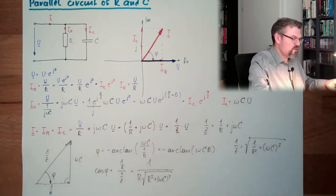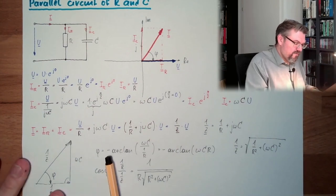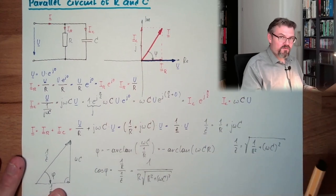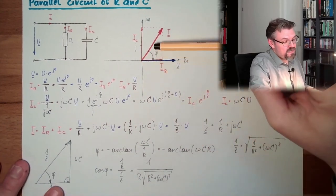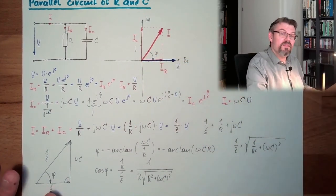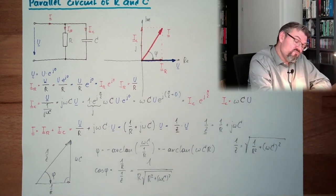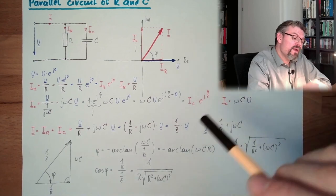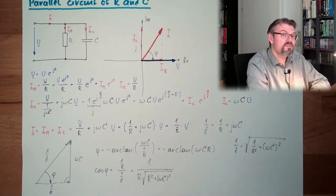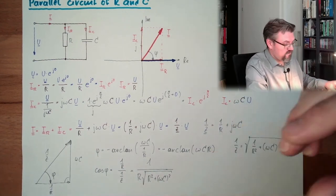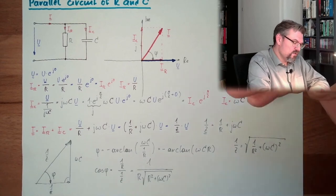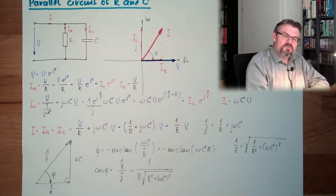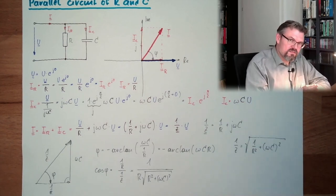Now we have everything again summarized for parallel connection of R and C. If you forget about this minus, just think about the pointer diagram. They will help you. Do you see? It's a negative angle. Negative angle means you have here from I to U and it's clockwise. So clockwise is mathematically negative. It's always the same rule.